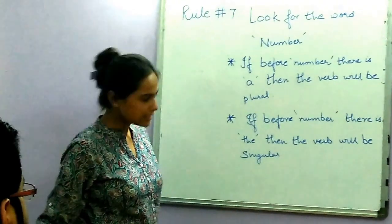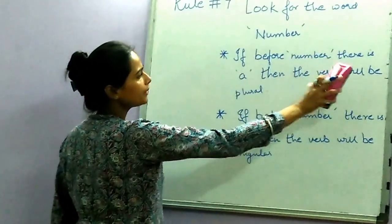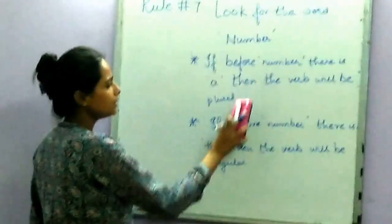So now we can take a look at the examples. So if a number, then the verb will be plural. If the number, then the verb will be singular.